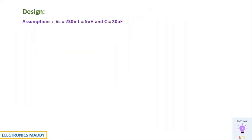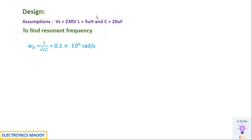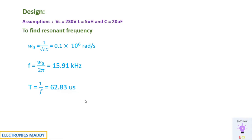Every design has certain assumptions. In this design we are assuming the supply voltage to be 230 volt DC, the inductor to be 5 microhenry, and the capacitor to be 20 microfarad. Based on the L and C values we will be determining the resonant frequency, which gives 0.1 × 10⁶ radians per second. The frequency is omega₀ divided by 2π, giving 15.91 kilohertz, and the time period is 62.83 microseconds. We are calculating this because it will be entered as the value in the pulse generator block in order to trigger the thyristor.